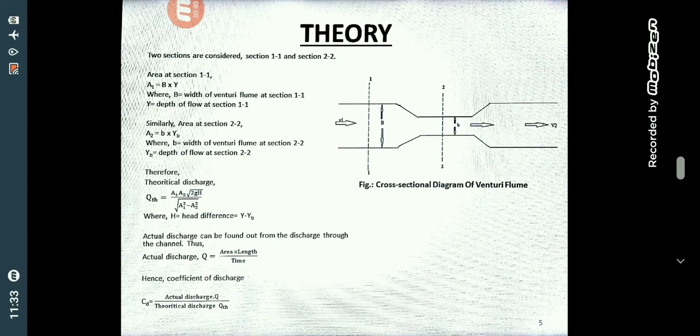At the throat the area decreases. The area at section 1 can be found by B into Y, where B is the venturi flume width at section 1 and Y is the depth of flow at section 1. Similarly at section 2, the area can be found by considering the width of the flume at section 2.